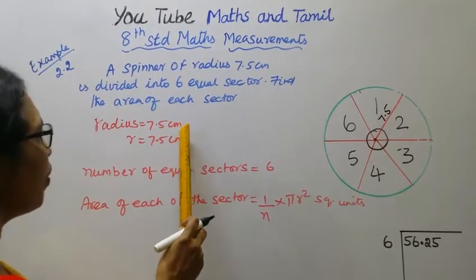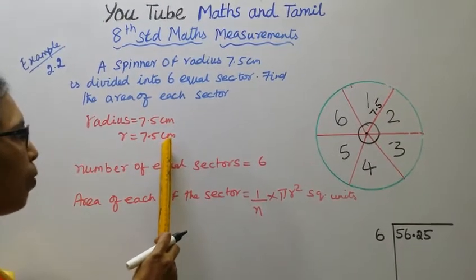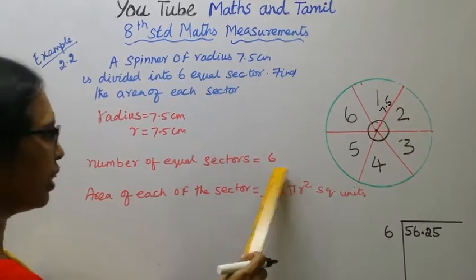Radius equal to 7.5 cm, r equal to 7.5 cm. Number of equal sectors: 6.